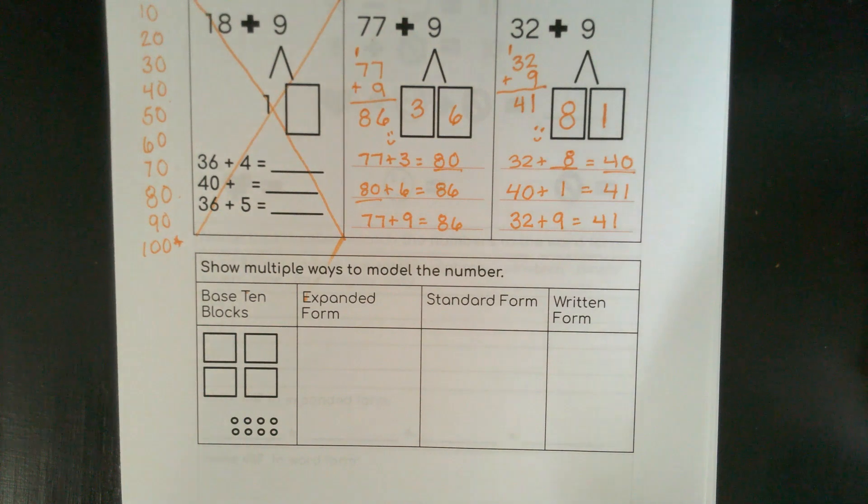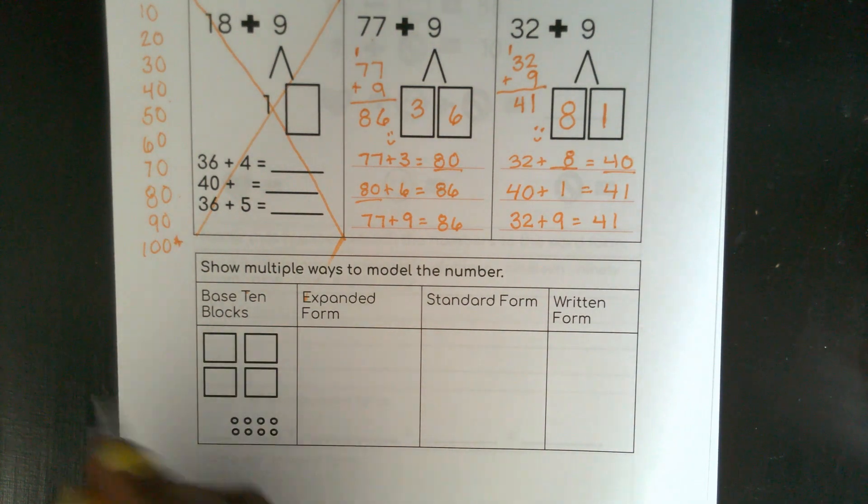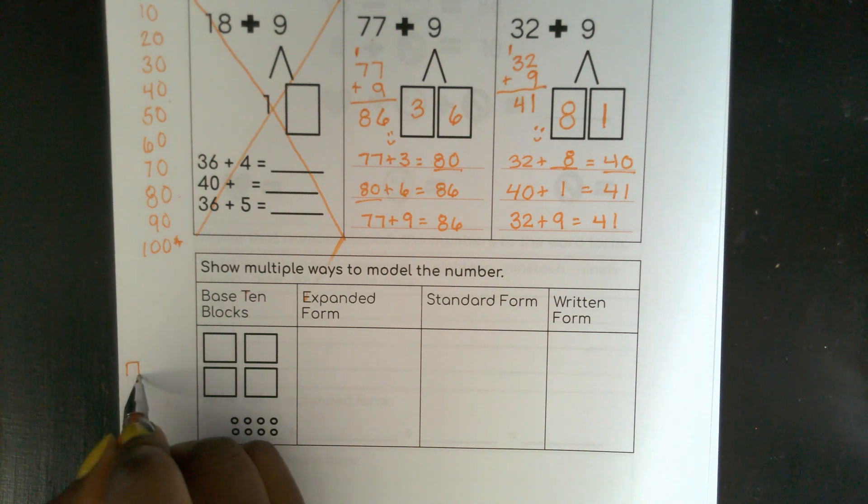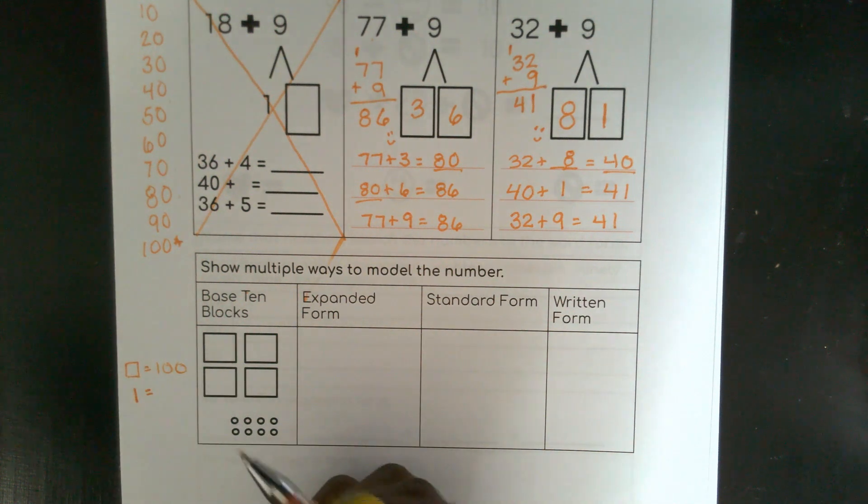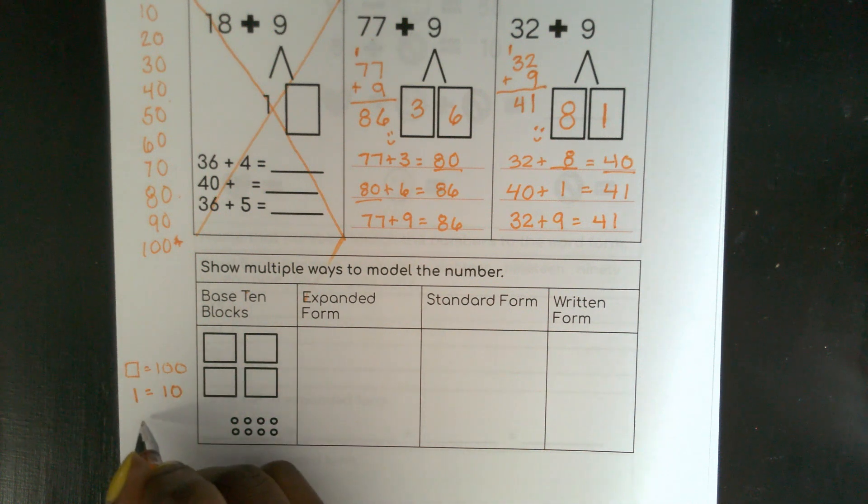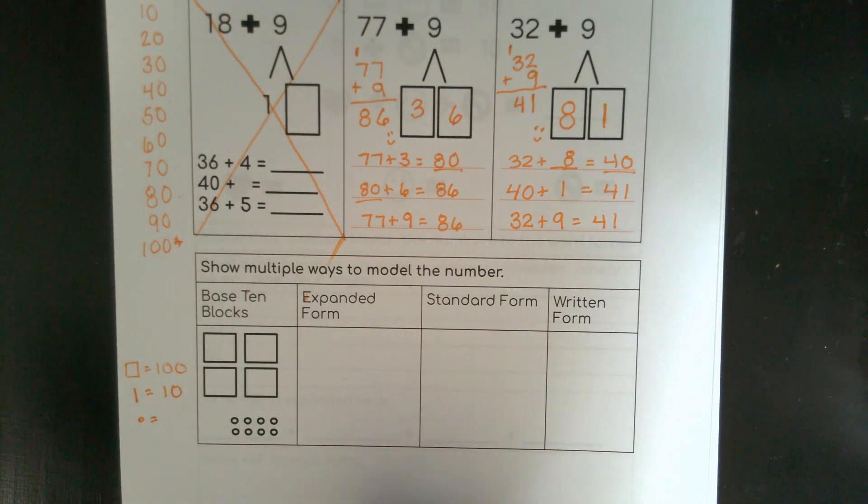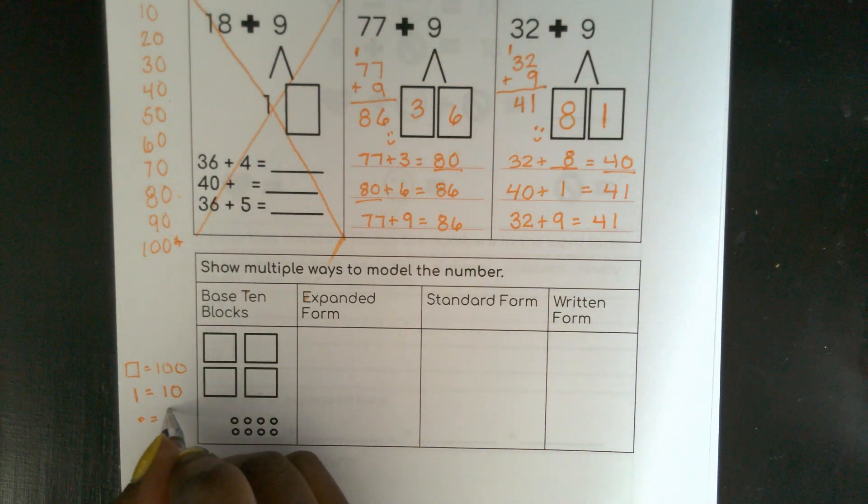So here, I have base 10 blocks that represent a number. Remember, the square equals 100. Here, the base 10 stick equals 10. And my little point here, the dot, equals 1.